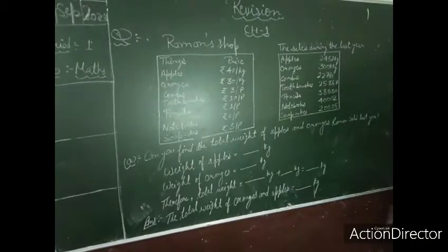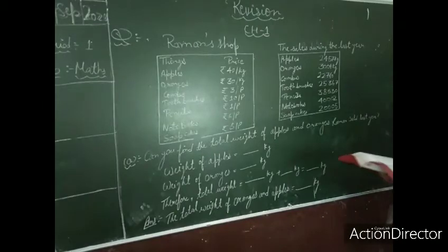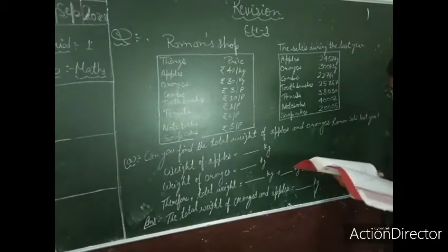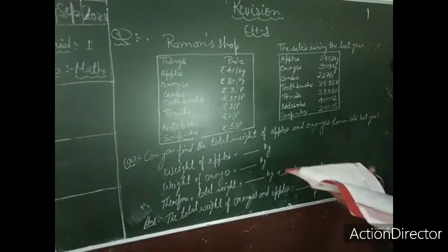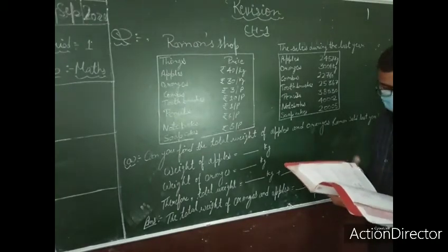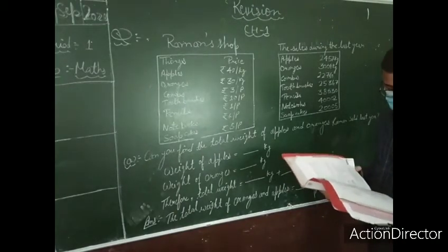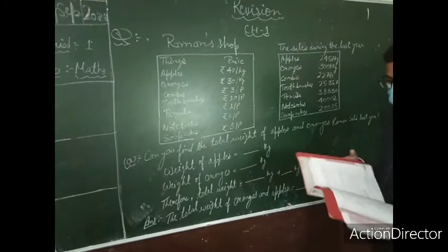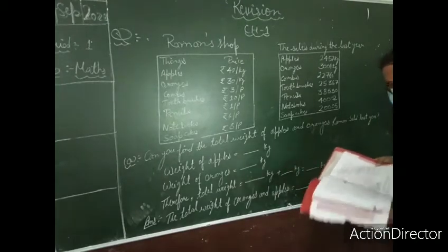Now friends, let me take a revision of chapter number 1. Here is the first question related to your chapter number 1 — Knowing Our Numbers. This is page number 14, question number 2.